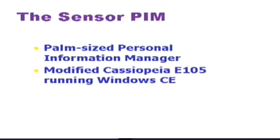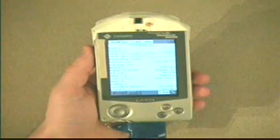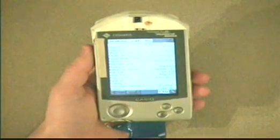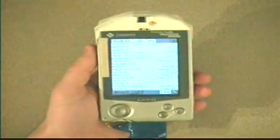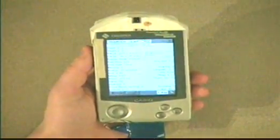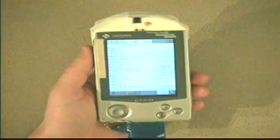We have built a prototype palm-sized personal information manager. This is a modified Casio PIO E105 running Windows CE. We have added a number of sensors to the device.